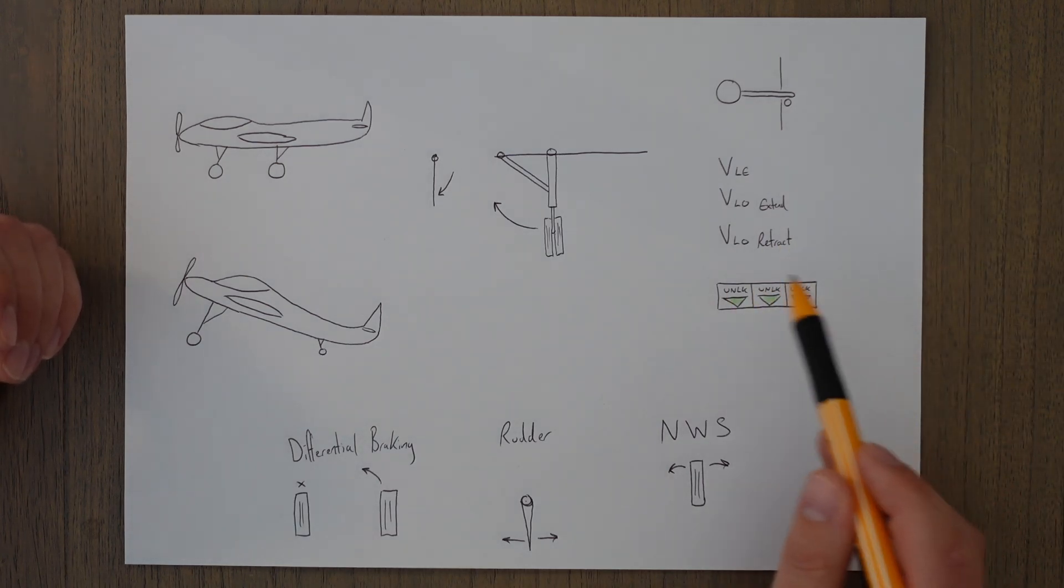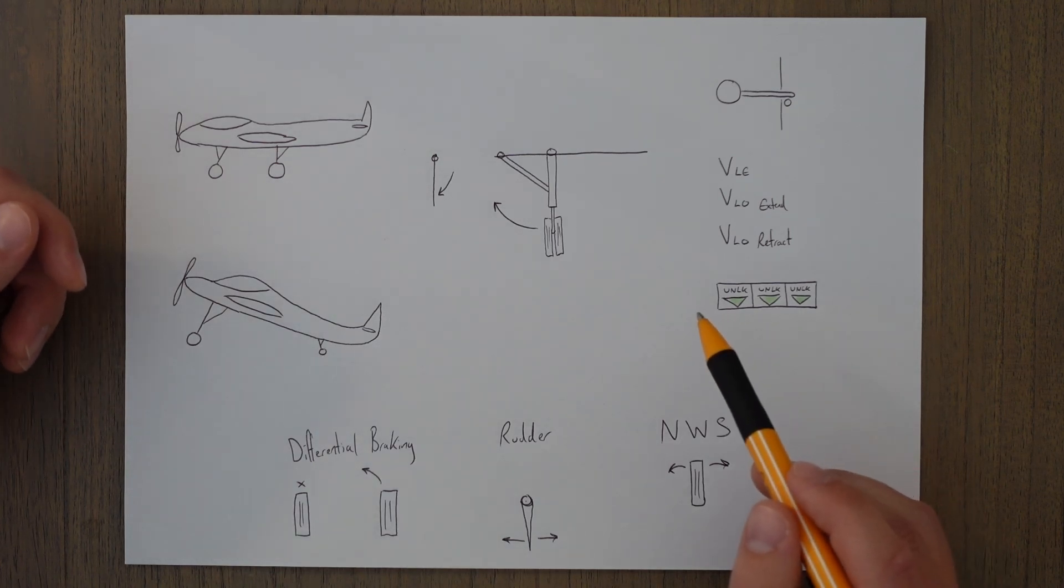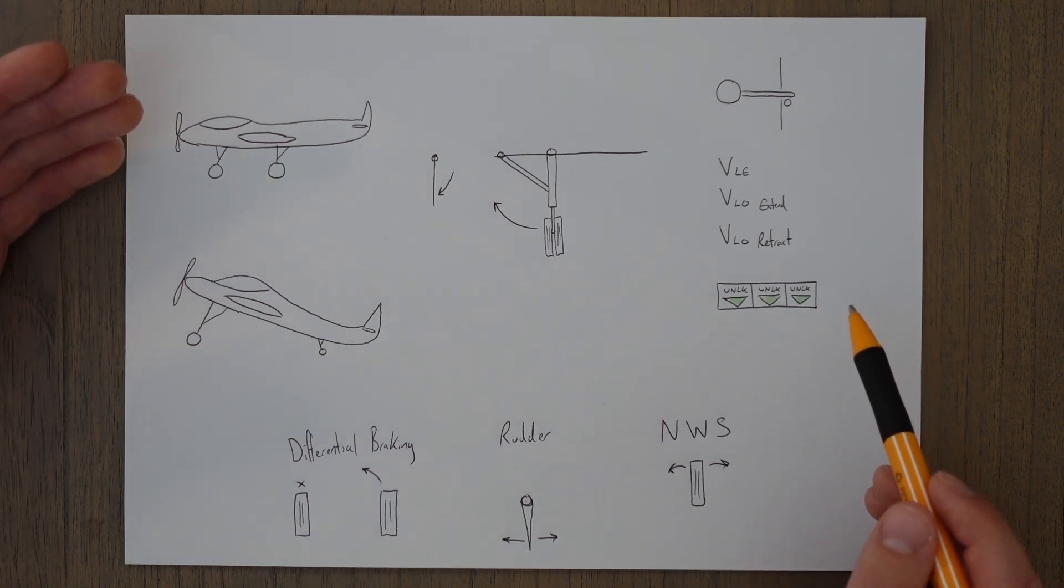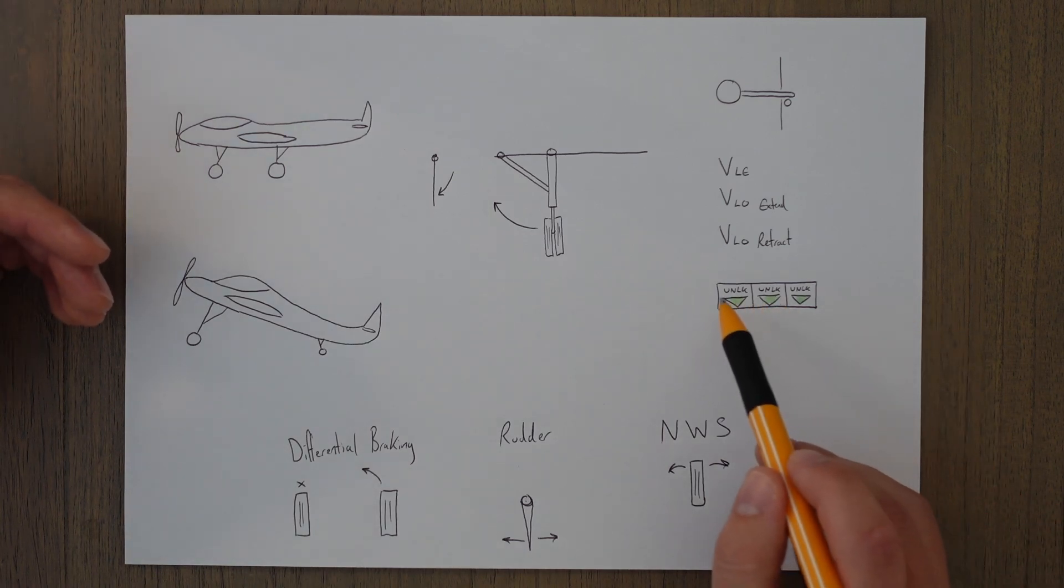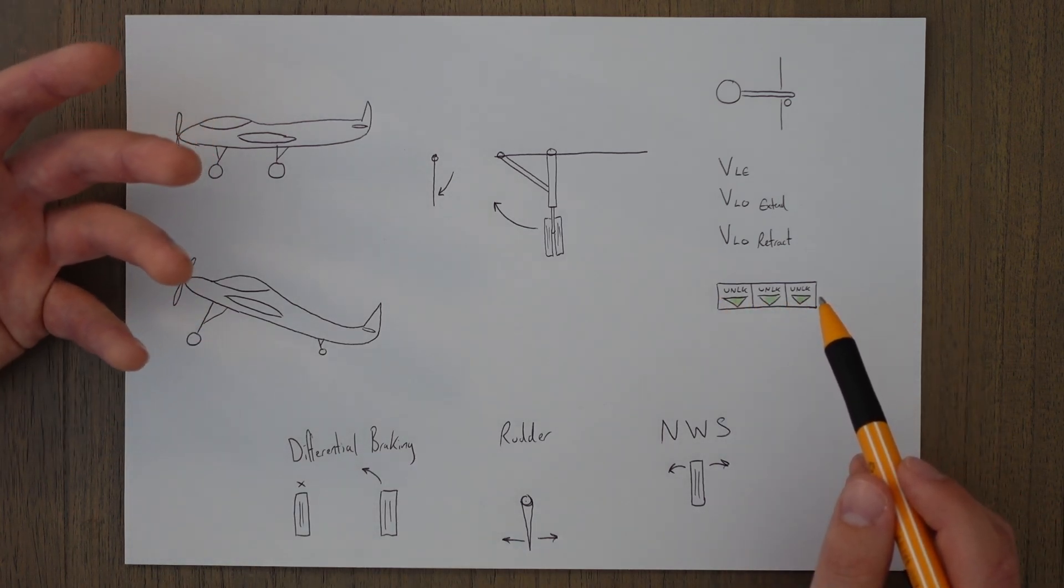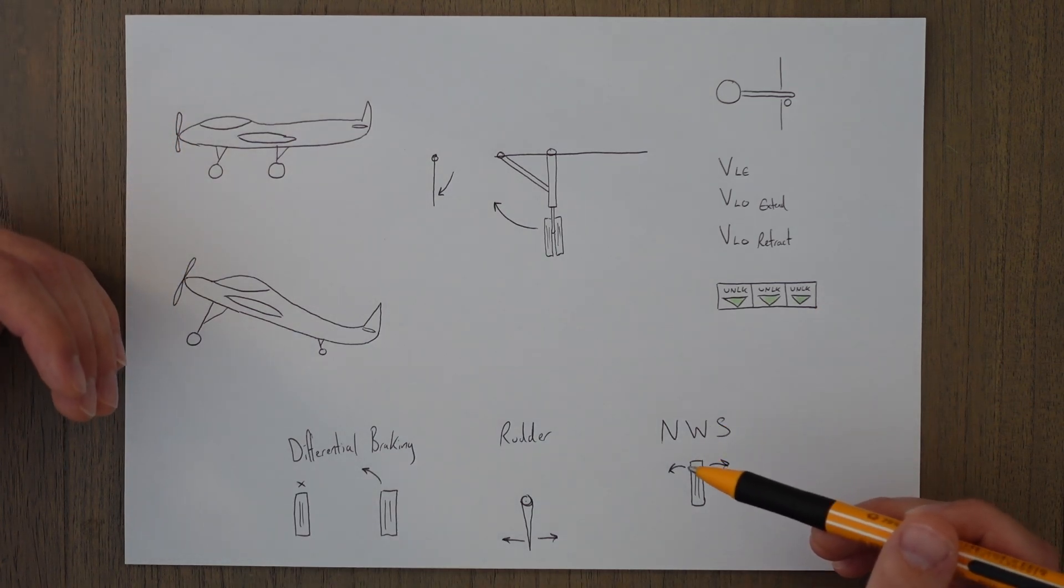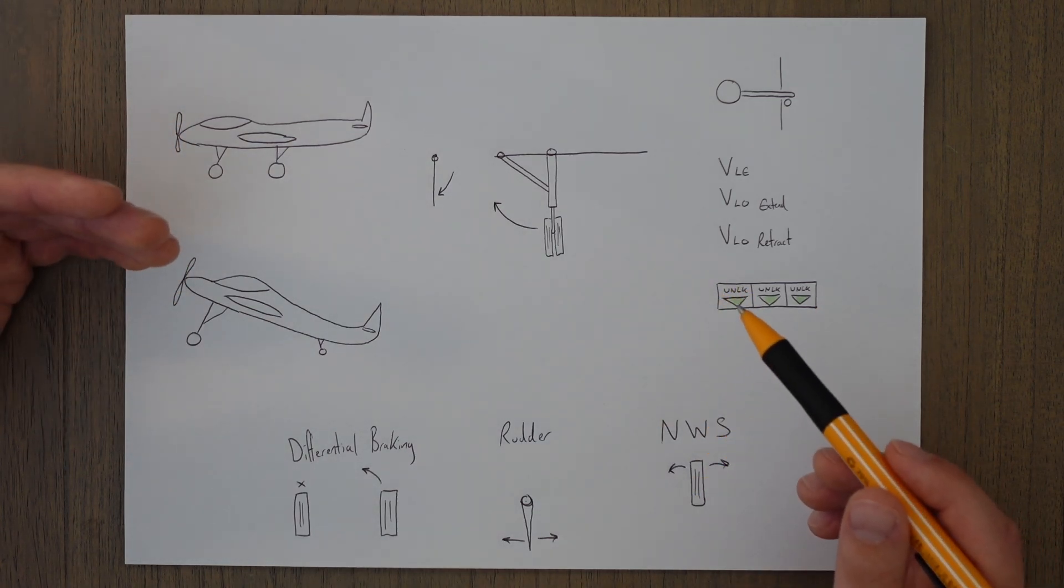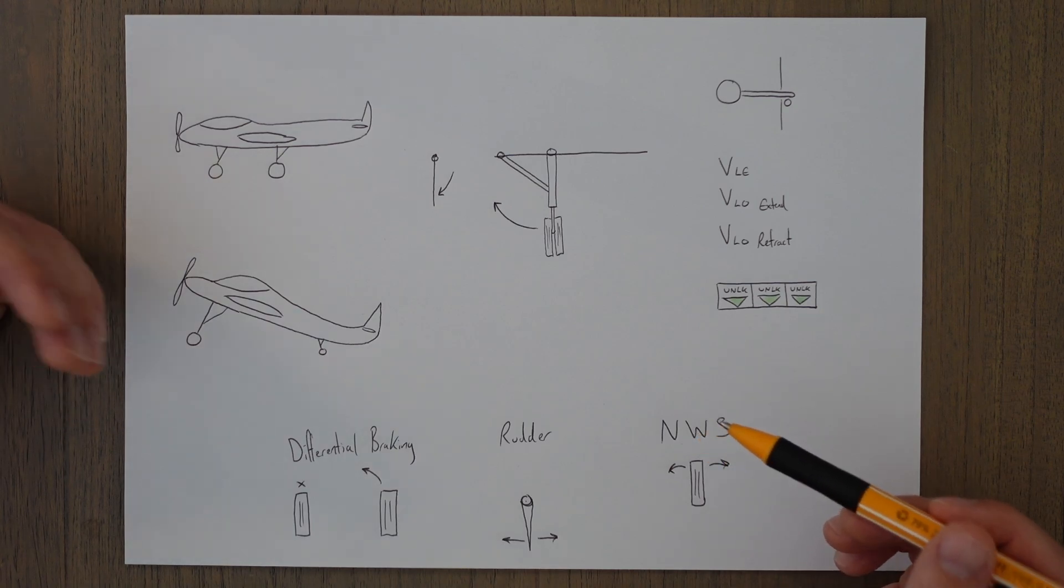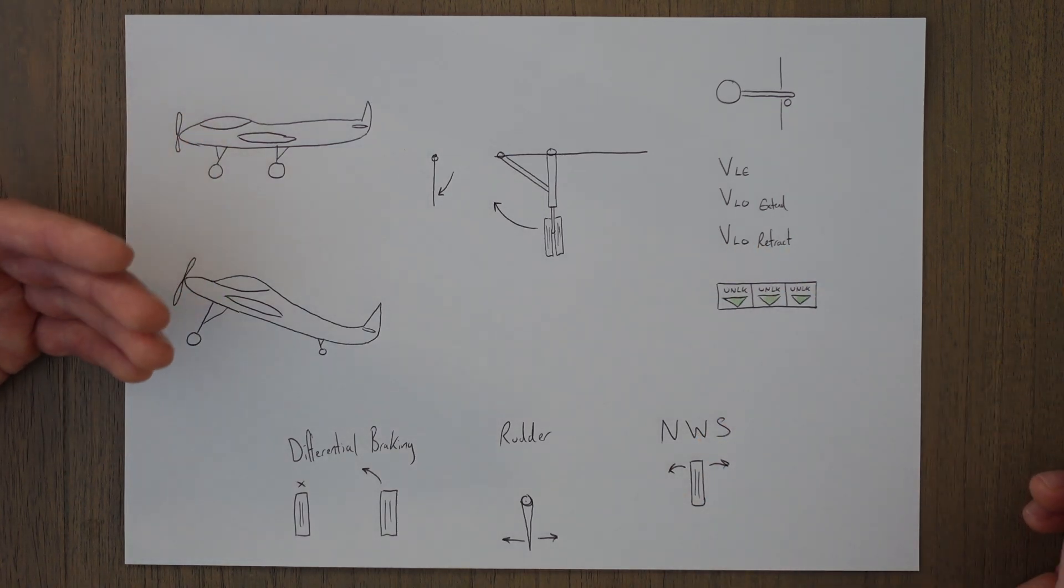We've got the light indicators—if we've got three greens like we have here, that means that the gear is down and locked. If they're all off, it means they're up and locked. And if we've got any red, it means that the locking microswitches haven't been activated yet, so it might mean that the gear is in transit, or it might mean that the gear is down but not locked in the down position, which could lead to a collapsed landing gear and an accident when we come into land.